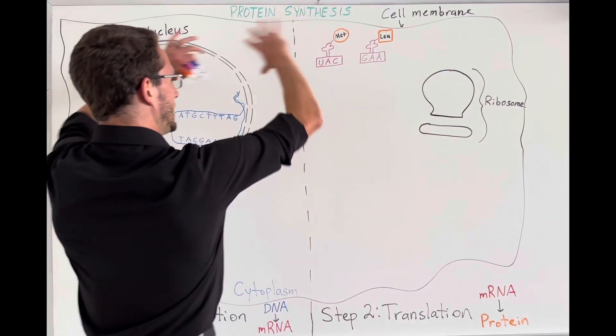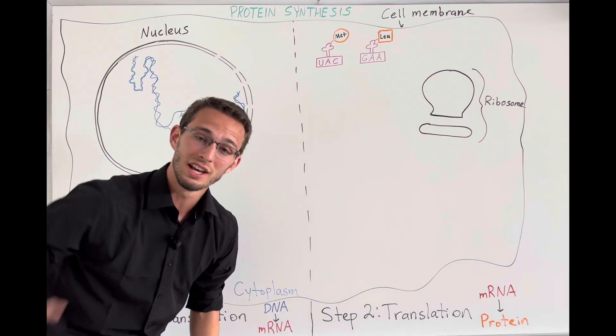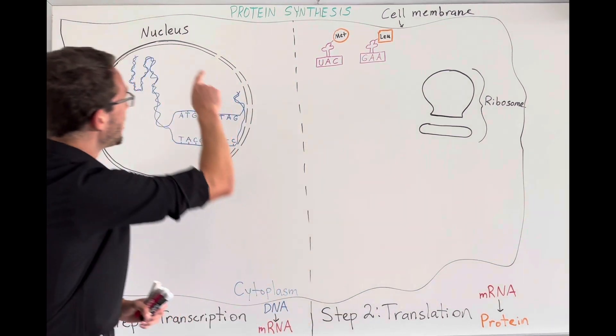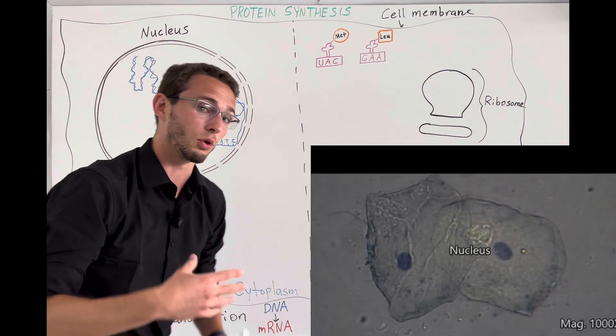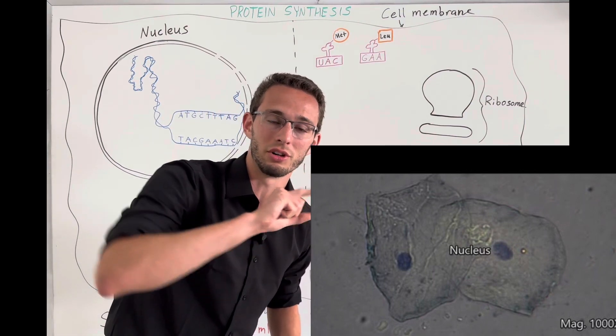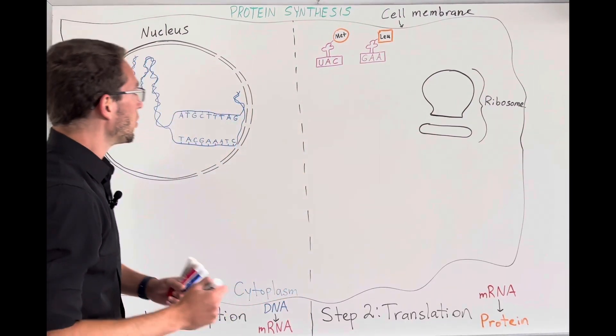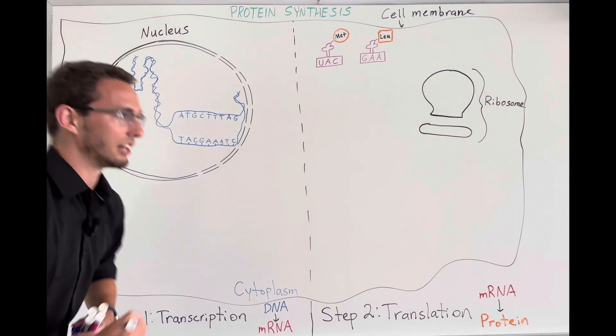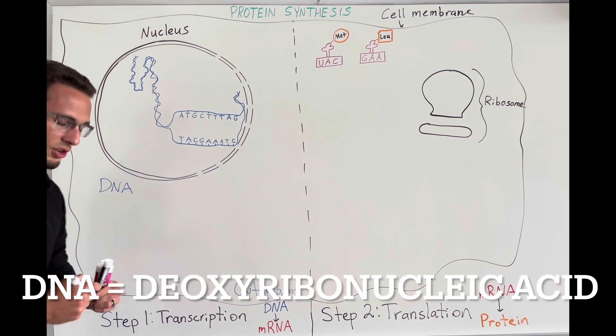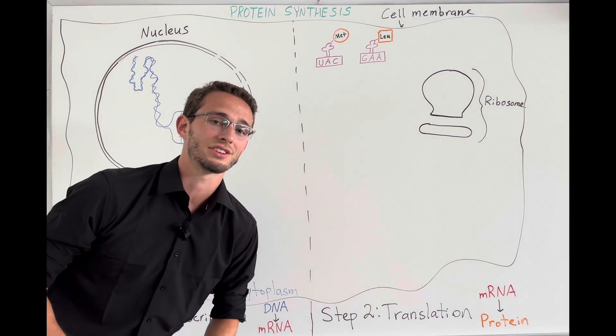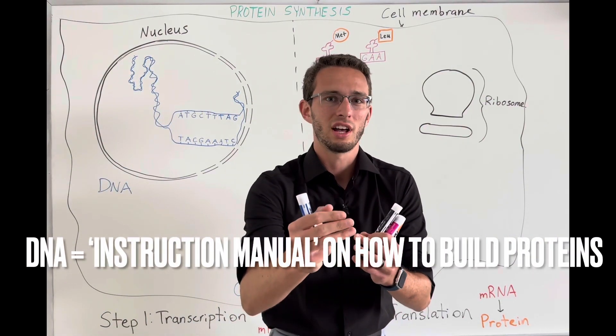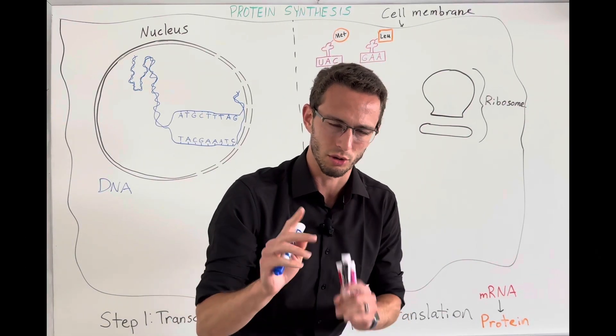First off, this is going to be just a normal diagram of any one of your cells. In your cells, you have this big, dark, circular center, which is called the nucleus. Anytime you look under a microscope, you see the big dark dot, that's the nucleus. And inside the nucleus, we have a very important long chain of molecule called DNA. This is short for deoxyribonucleic acid. Now, I want you to think of DNA as like the instruction manual for your cells and how they're going to build those proteins.